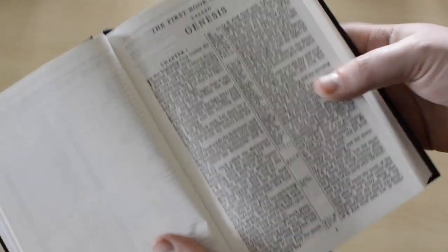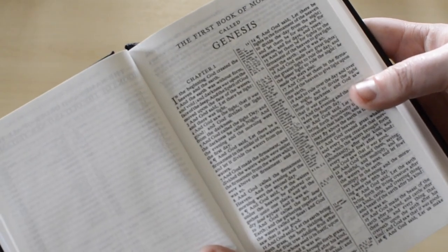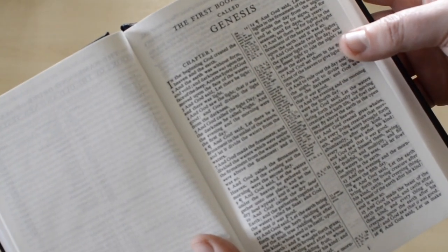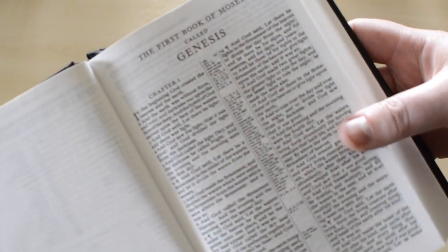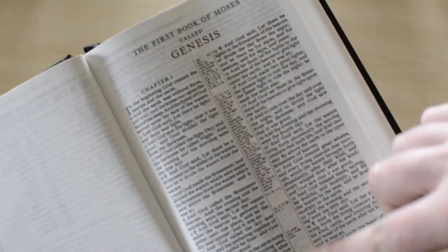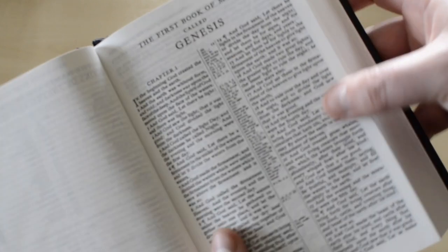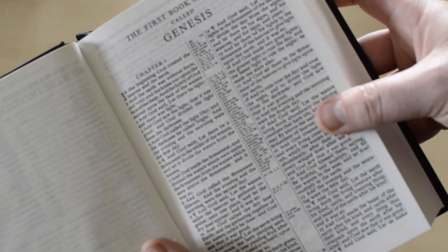Now, in Genesis, we want to see that we have a very nice dark and bold font. Very nice type. And we've got the central column references and notes of the translators.